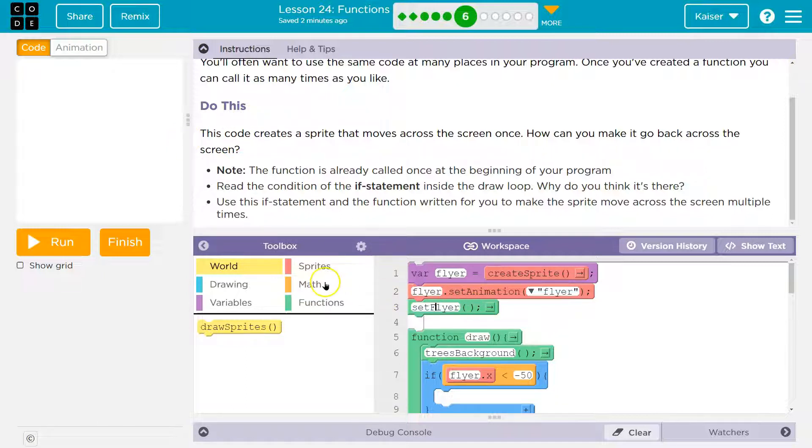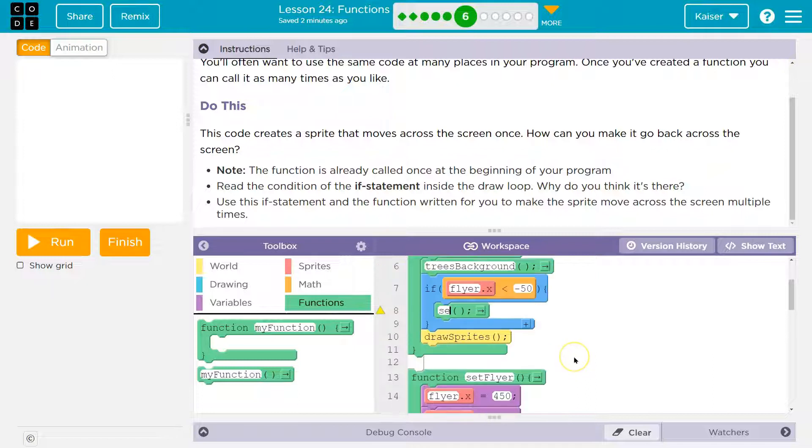So now if we need to restart it, we want to reposition our player. We don't need trees background. That can be here. The background's at the top, but we need to reposition the player. So don't we want to reset the flyer? So let's call that exact same function right here.